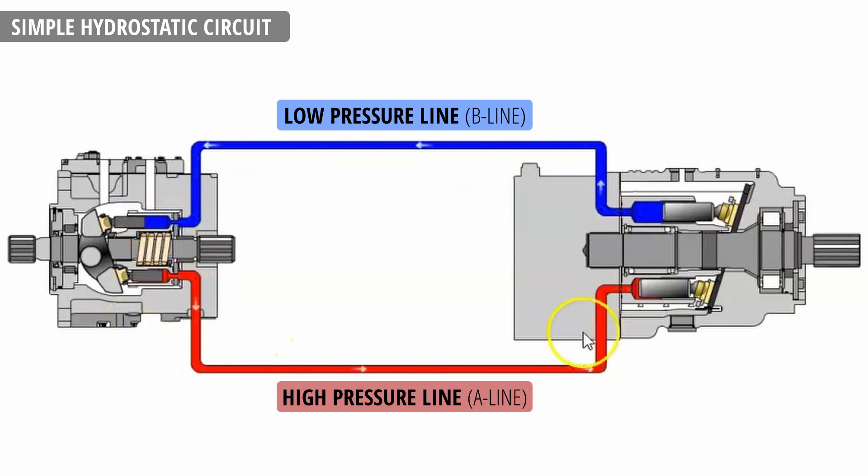Now the red line is the pressure line and what determines that pressure is the load on the motor. More load will require more pressure. And load in our case is the weight of the vessel's hull.